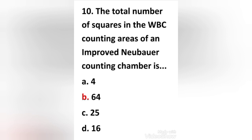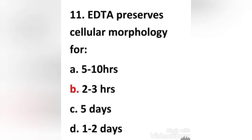Next question: The total number of squares in the WBC counting areas of an improved Neubauer counting chamber is — (a) 4, (b) 64, (c) 25, (d) 16. The right answer is option B: 64.